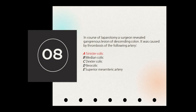The next question: during laparotomy a surgeon revealed gangrenous lesion of the descending colon, caused by thrombosis of a specific artery. Thrombosis is clot formation in an artery, which causes ischemia of an organ, leading to necrosis or gangrene. Gangrenous lesion specifically occurs in parts of the body that communicate with the outer environment — the oral and anal openings allow the GI tract to communicate with the environment, making gangrenous lesions possible in the colon.